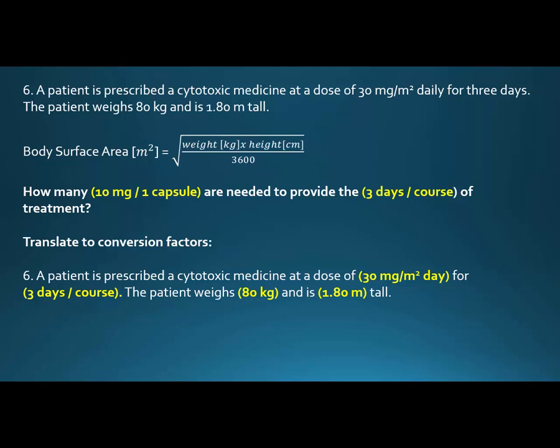We go to the conversion factors and want to make sure we have good conversion factors — something over something. The question asks how many capsules are needed, so 10 milligrams per one capsule. We need to provide a three-day course of treatment. Our known values are 30 milligrams per meter squared per day, three days per course, 80 kilos, and 1.8 meters. Generally, these weights and heights tend to end up on the left-hand side.